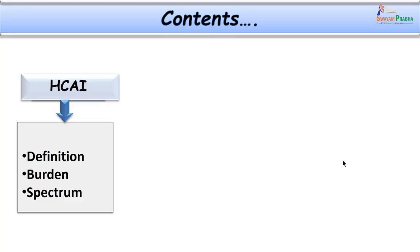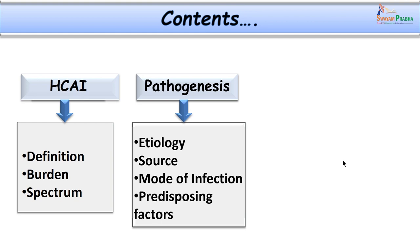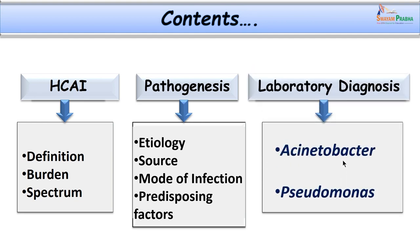Now, after discussing this case of hospital acquired infection, let us discuss the topic under the following headings: what are hospital acquired infections or healthcare associated infections as they are now renamed; their definition, burden, and different types; their pathogenesis and detailed laboratory workup. We will focus on two important organisms — Acinetobacter and Pseudomonas.